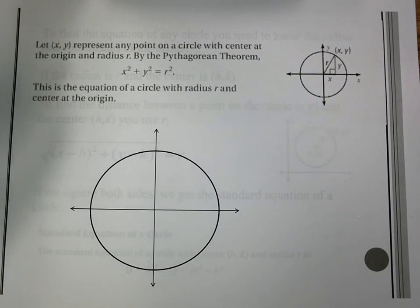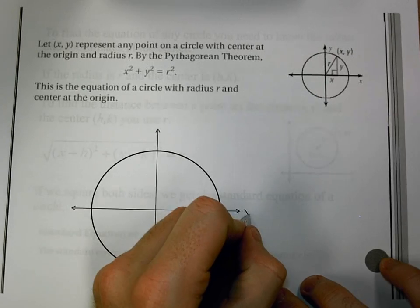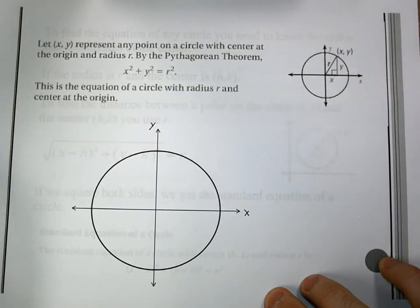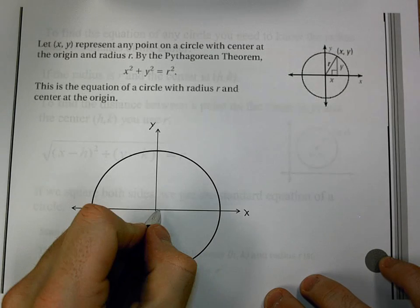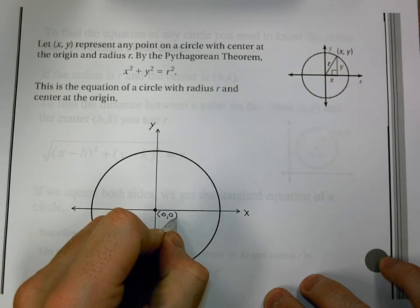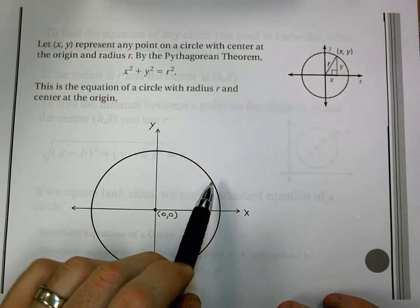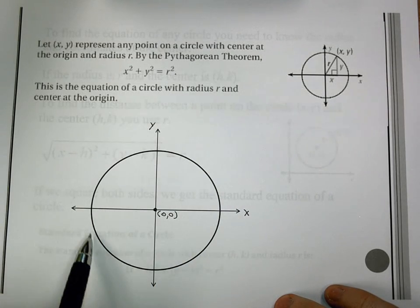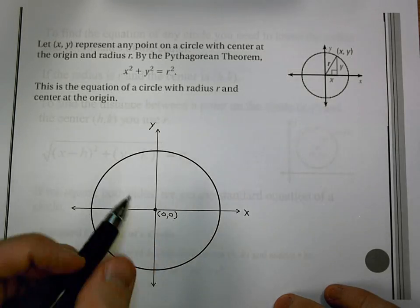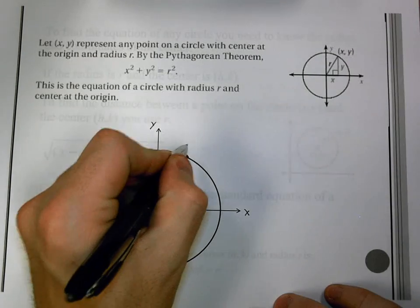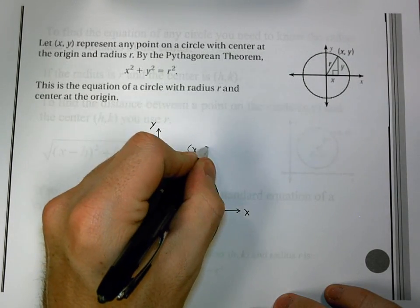If we let (x,y) represent any point on a circle with center at the origin and radius r, let's start with that. So I have my xy-axis, I have my center at the origin (0,0), and I'm going to pick a point. It doesn't matter where on the circle, just think of it as (x,y). It could be anywhere on the circle, but there's some point here, x, y.